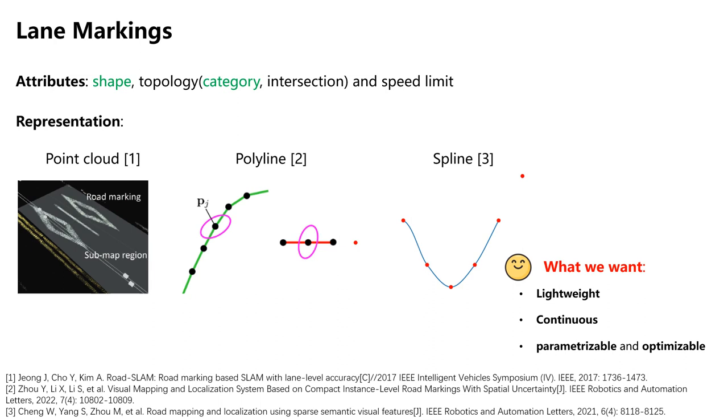The image showcases three different representations of lane marking geometry. Compared to point cloud representation, which consumes more memory, and polyline, which are discrete approximations of curves, splines are lightweight and provide continuous characteristics. We can parameterize splines with fewer control points and optimize their shapes by optimizing these control points.